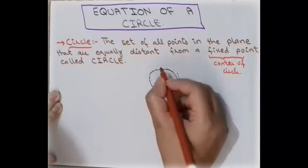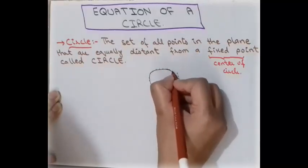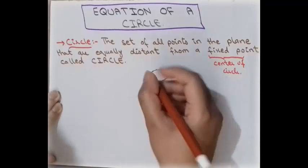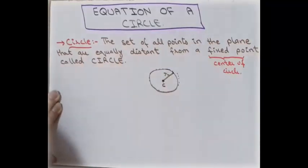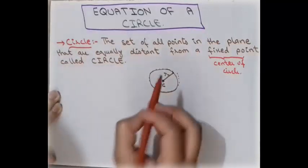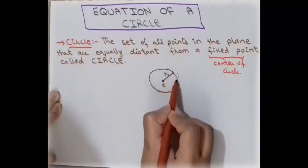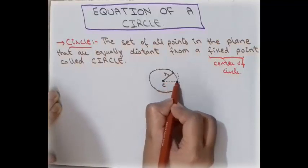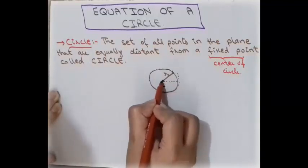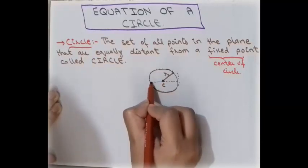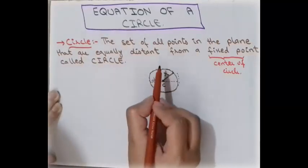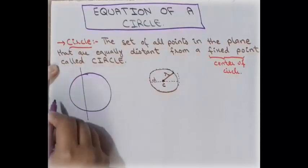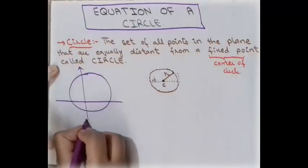The distance from the center of a circle to any point on the circle is called the radius. For example, if we choose a point on the circle, the distance between the center and that point is the radius. The full length passing through the center that meets the circle on both sides is called the diameter — that is, double the radius. The distance around a circle is called the circumference.